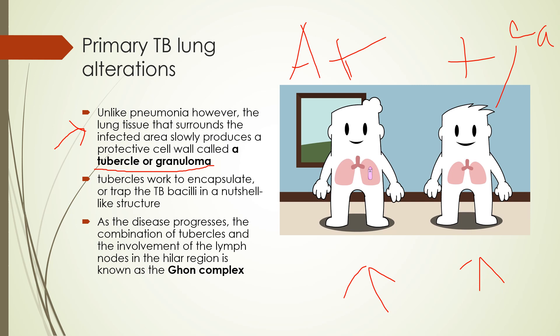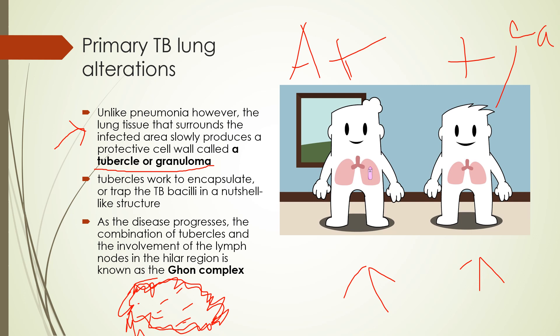These granulomas form a wall to encaseate the bacilli and stop them from spreading. The body essentially says: 'I can't destroy you, but I can contain you.' It fences the bacteria into a small area. This process involves the lymph nodes in the hilar region — this is what's called the Ghon complex.